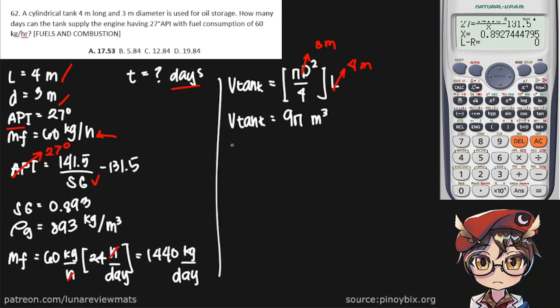Next, we can find the mass of our tank by multiplying the density of our gas by the volume of our tank, which we already both know. This one is 893, and this one is 9 pi. And that should give us a value of about 25,250 kilograms.